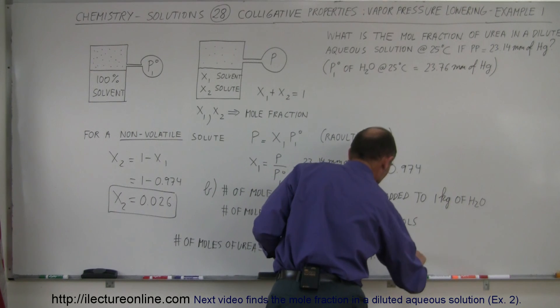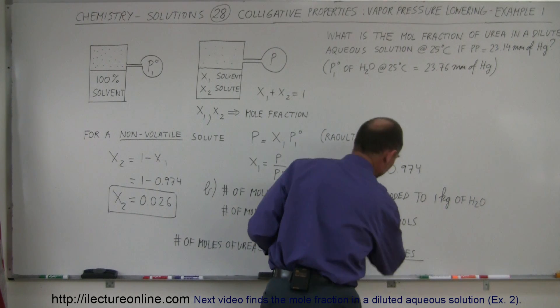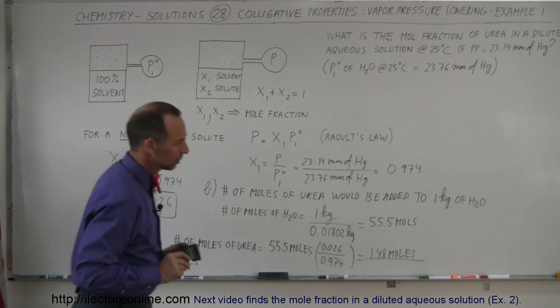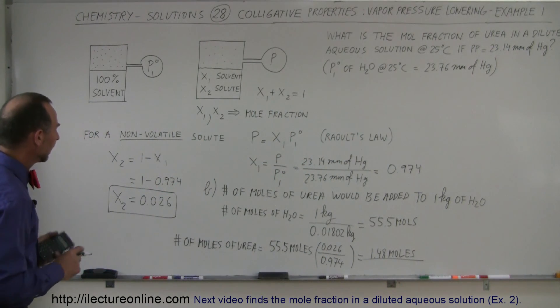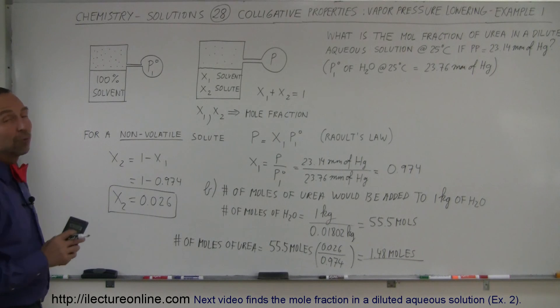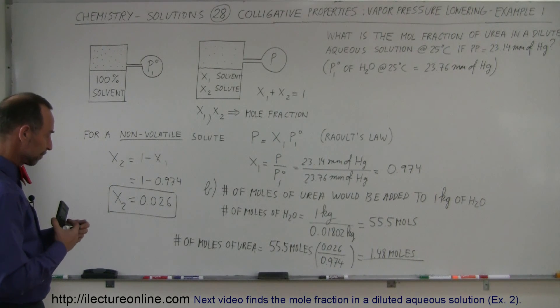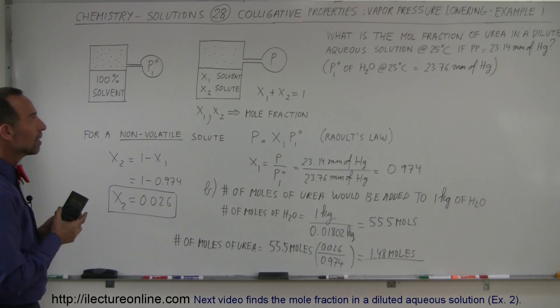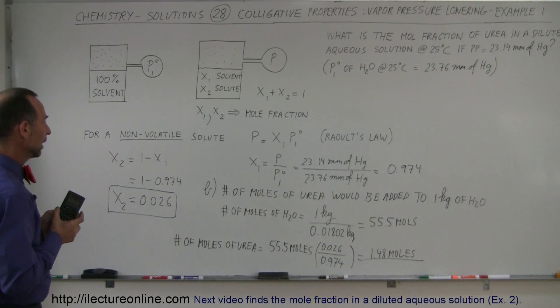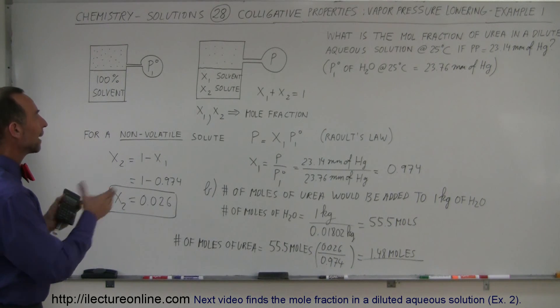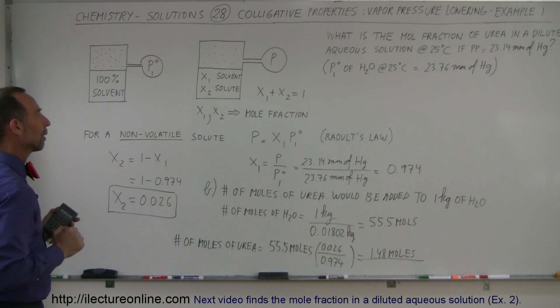And so that would be the number of moles of urea in our particular solution if we had 1 kilogram of water in our solution. And that's how we use the partial pressure vapor and the way it's lowered by adding a solute in it using Raoult's law.